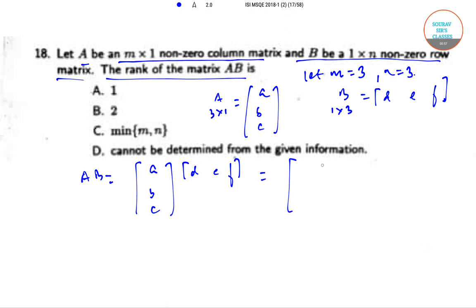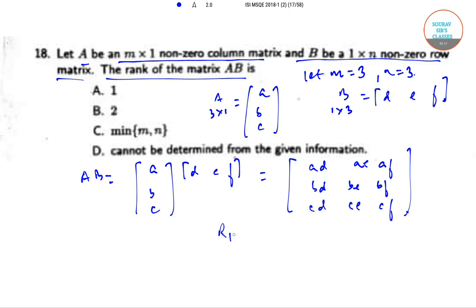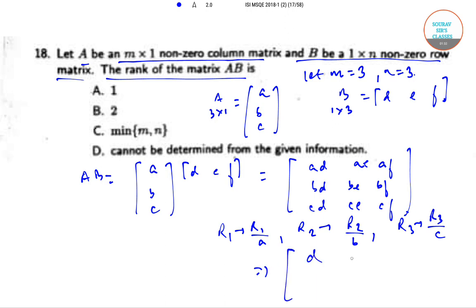That is equal to: ad, ae, af; bd, be, bf; and cd, ce, cf. Now let R1 = R1/a, R2 = R2/b, and R3 = R3/c. Then the matrix becomes d e f, d e f, d e f.